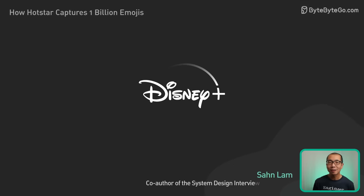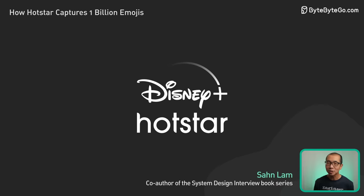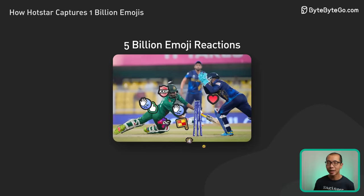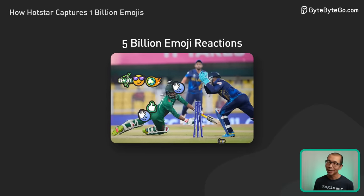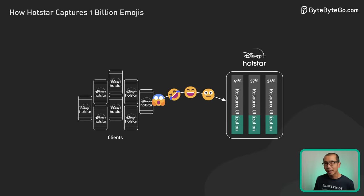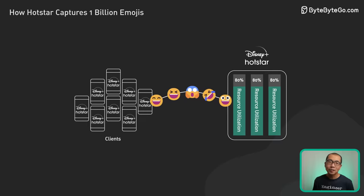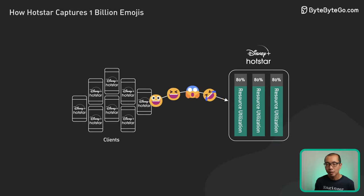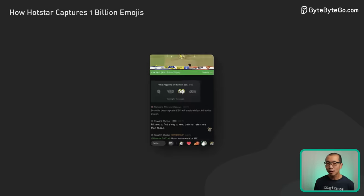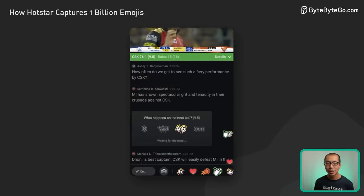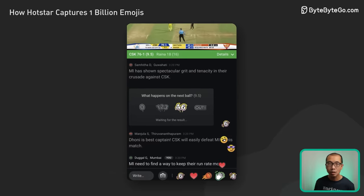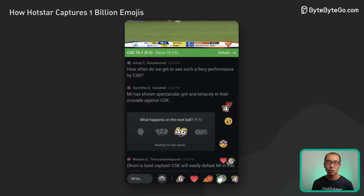Today, we are plunging into how Disney Hotstar aced the extraordinary challenge of managing 5 billion emoji reactions during a high-tension cricket World Cup match. Imagine a thrilling match with millions of fans glued to their screens. As excitement built up, millions of emotional fans flooded Hotstar's back end with emoji reactions, pushing their servers to the limit. Let's explore how Hotstar solved this difficult engineering challenge and turned passive viewers into an active community united by the roller coaster of emotions that only live sport can stir up.